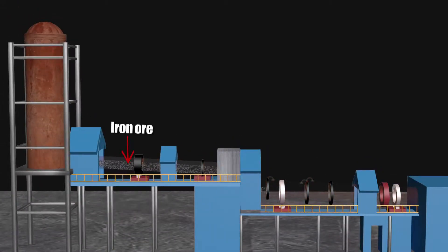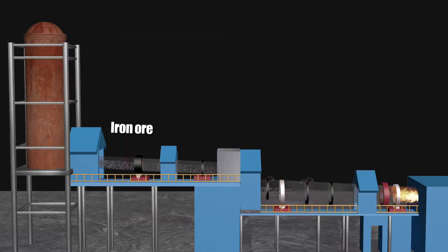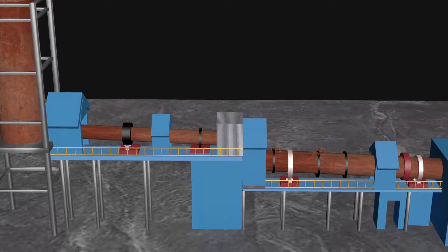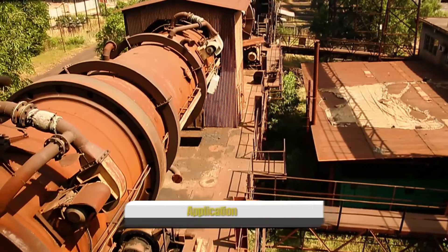Iron ore is fed into the preheating kiln instead of the main kiln. As the iron ore travels from the feed end towards the discharge end of the preheating kiln, the gases from the main kiln pass in the opposite direction. The sensible heat in the gases is transferred to the iron ore, and by the time it leaves the preheating kiln, its temperature rises from ambient to above 650 degrees centigrade. Hence, almost the entire length of the main kiln is available for the reduction of iron ore.